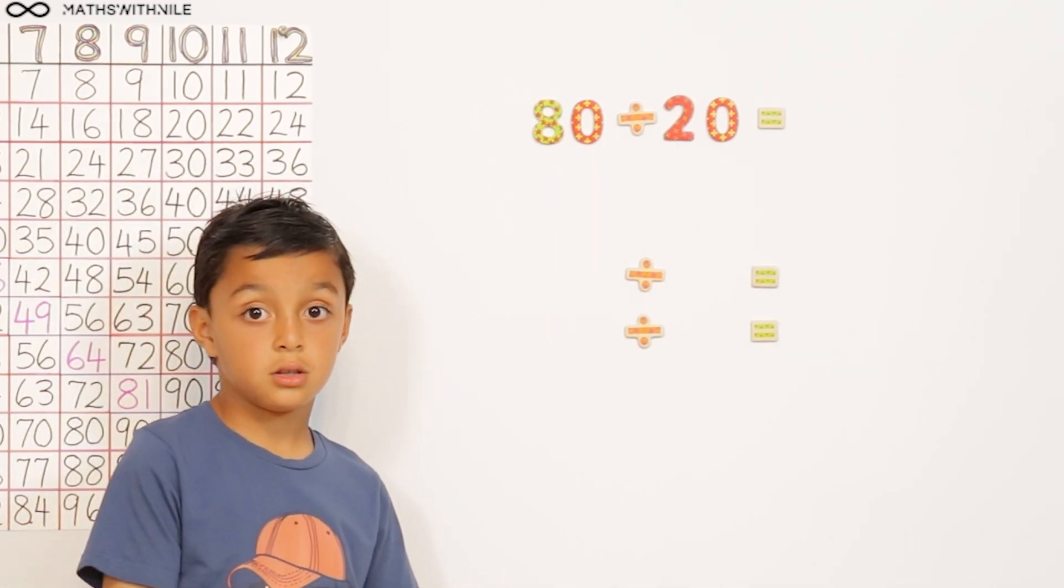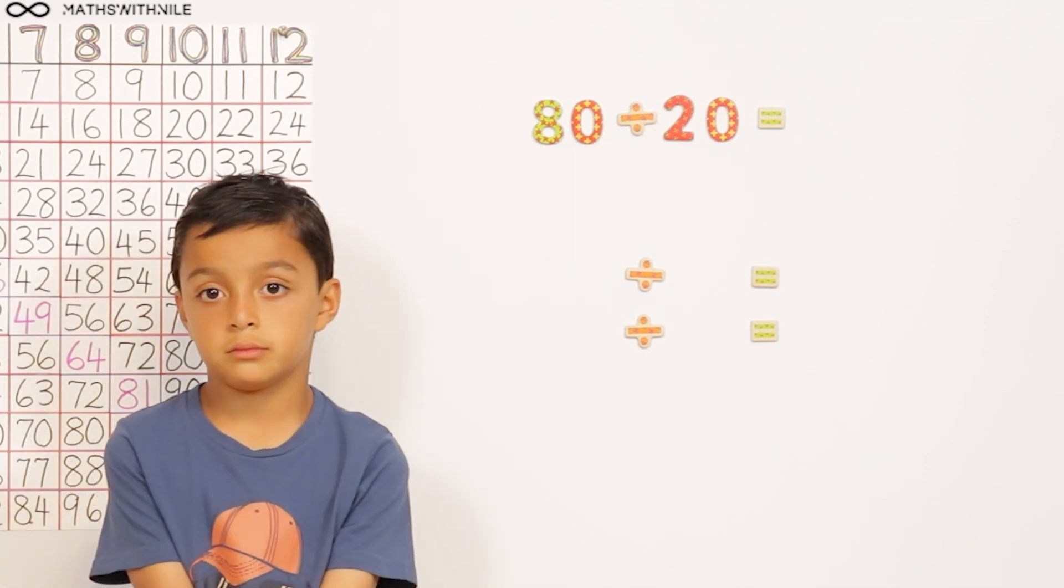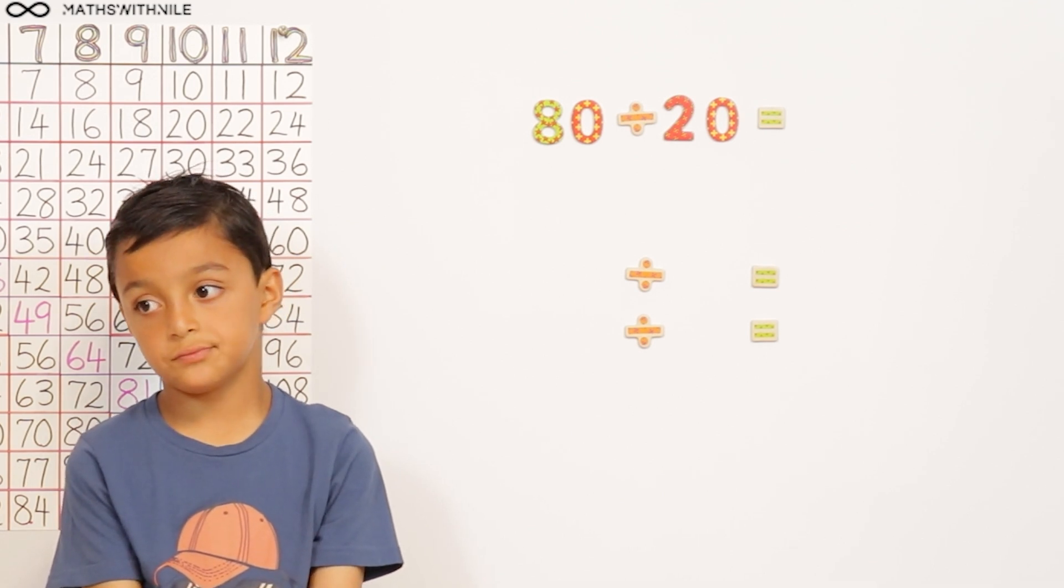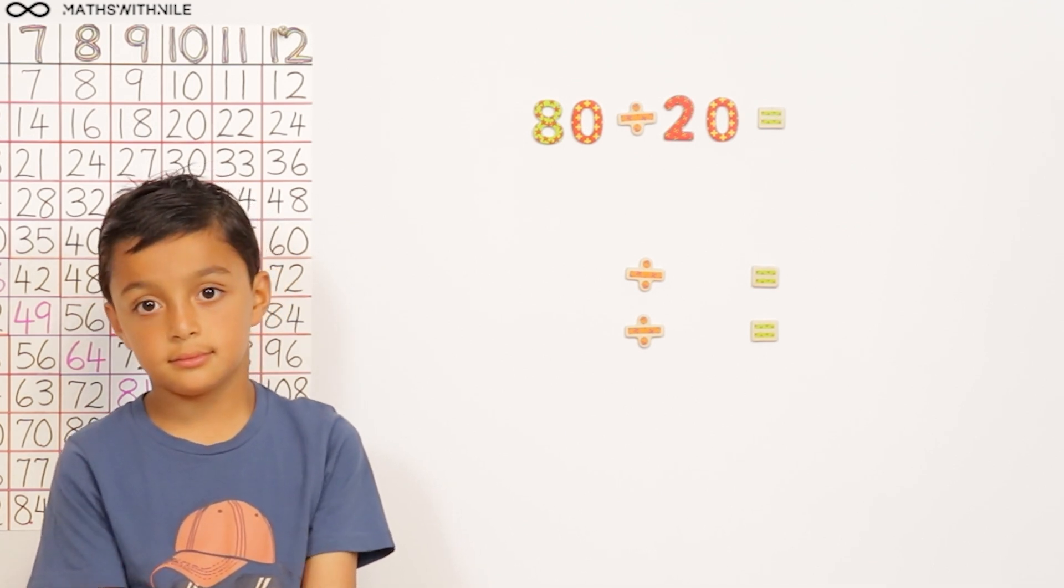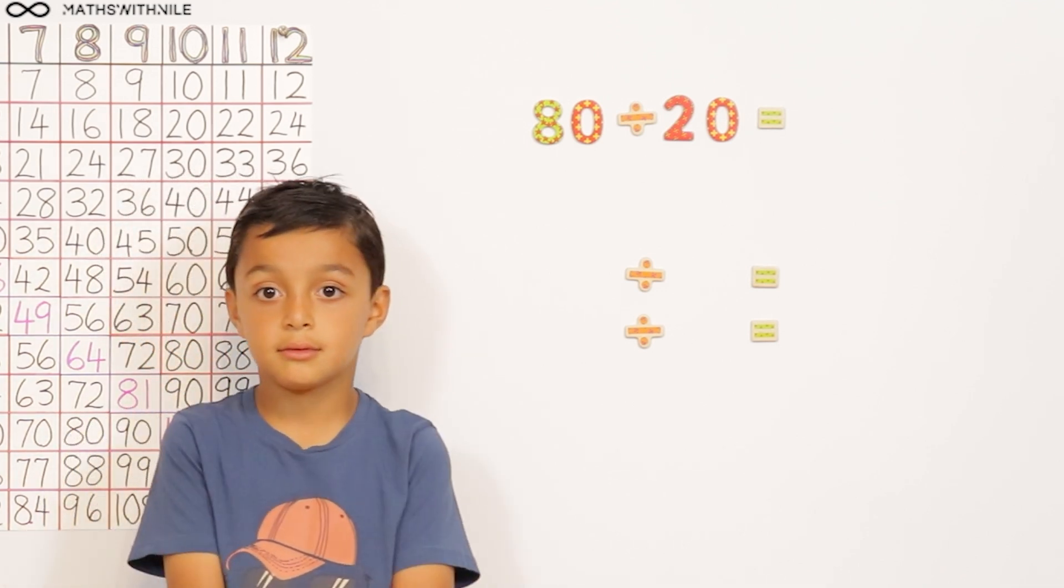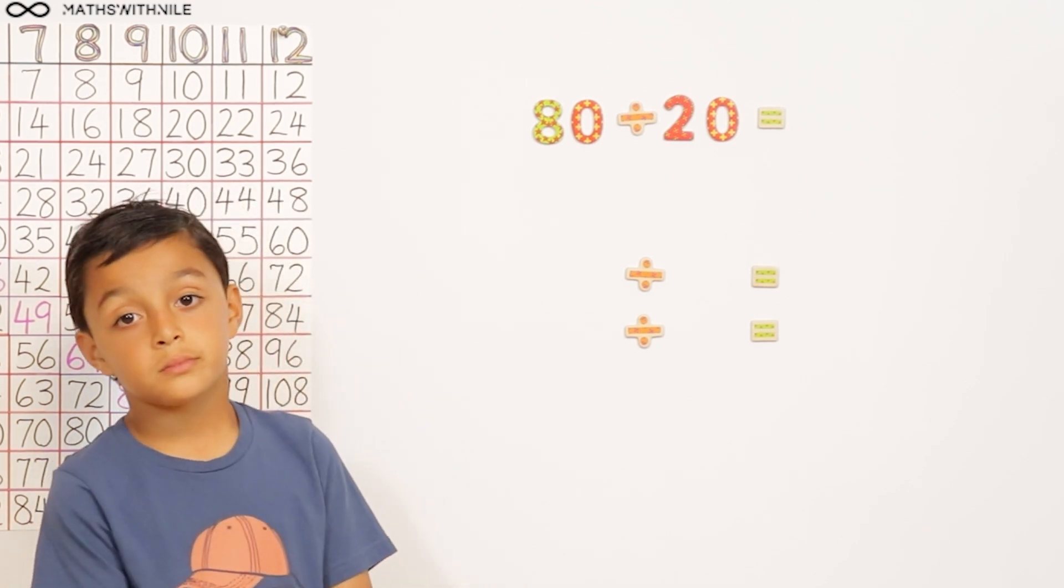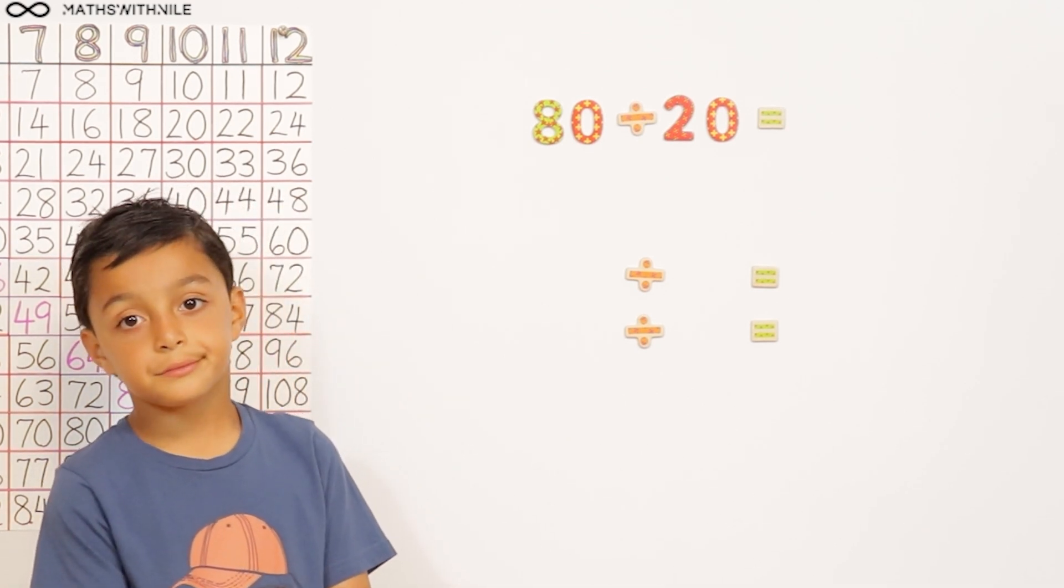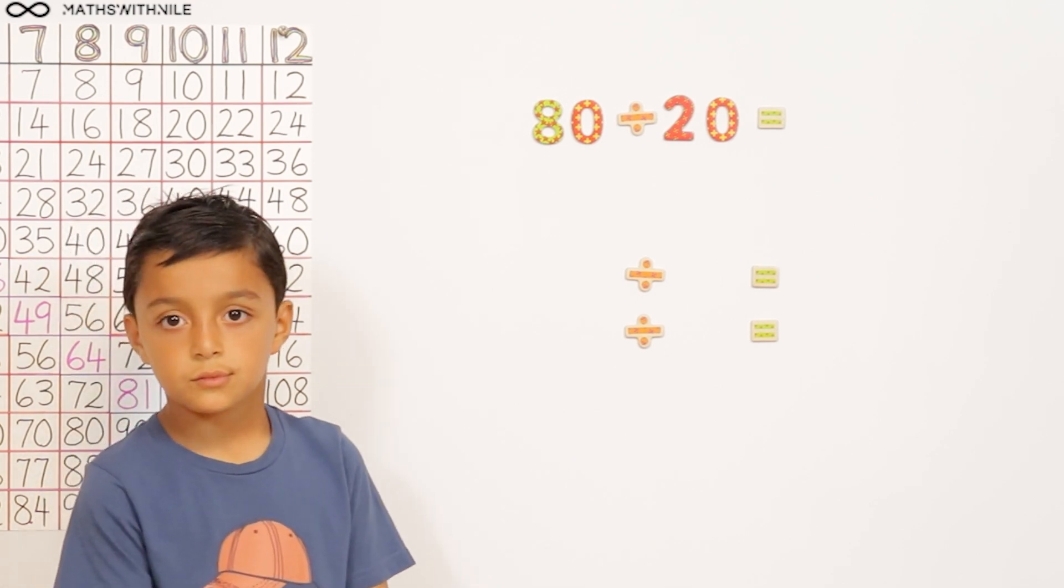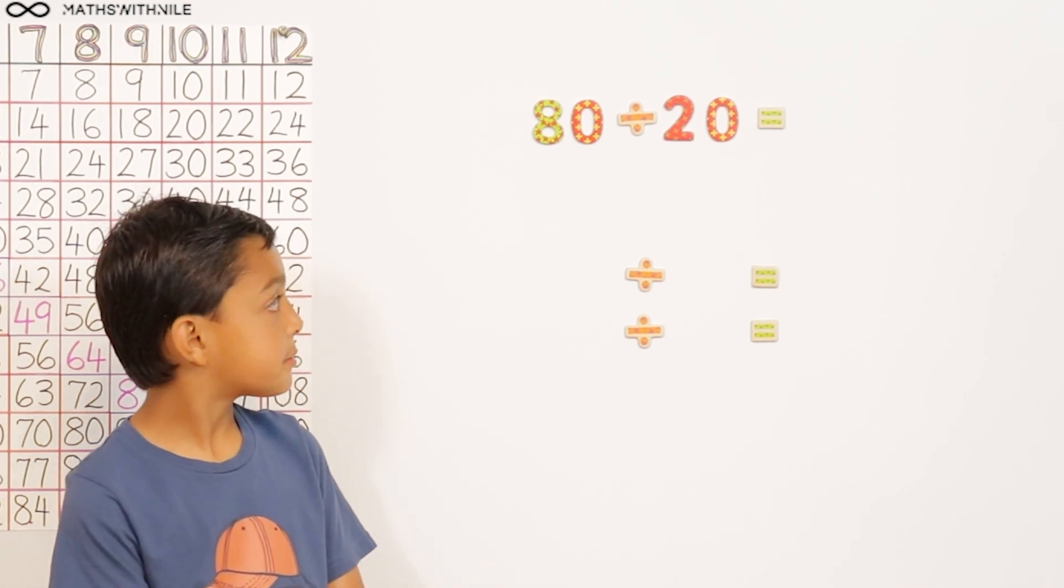So Niall, that question on the board, can you read it out for us? 80 divided by 20. Can you think of two numbers that it's easy to divide by, that when you multiply it together we get 20? 10 and 2. 10 and 2. So instead of dividing by 20 in one go, what we're going to do is first divide our number by 10, and then divide by 2. Because 10 times 2 is 20. Good, so that's what we're going to do.